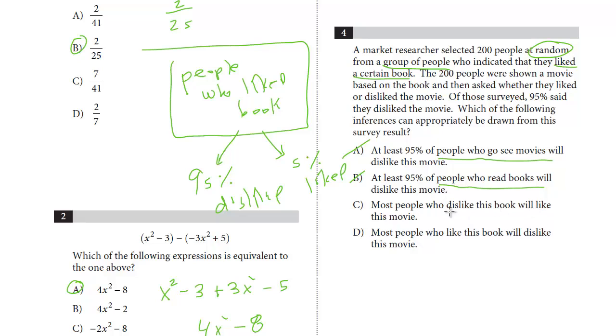Most people who dislike this book will like this movie. Now they're doing it backwards. In other words, most people who dislike the book, again, we're only dealing with people who like the book. D, most people who like the book, that's the population, will dislike. And that's exactly what the sample determined. Just be careful. You have to pay attention. This one I don't think is too difficult. Sometimes they're more complicated. But just remember, you only can make a conclusion about the people who were sampled.